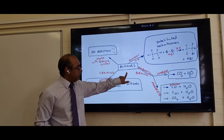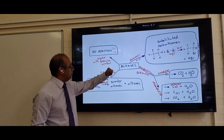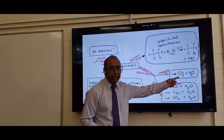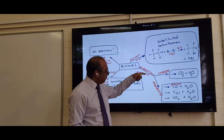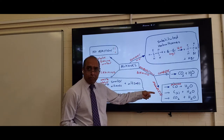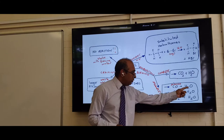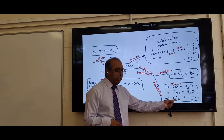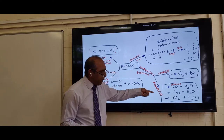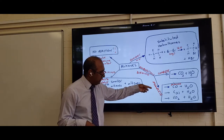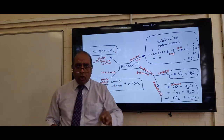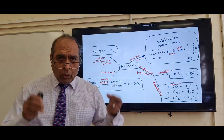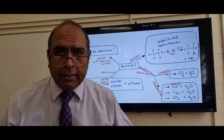For burning or combustion: if something burns completely, you get carbon dioxide and water vapour. If combustion is incomplete — not enough oxygen — you get a mixture: you may get carbon monoxide and water vapour, carbon solid (soot) and water vapour, or carbon dioxide and water vapour. All three reactions happen simultaneously during incomplete combustion, but only one occurs during complete combustion.